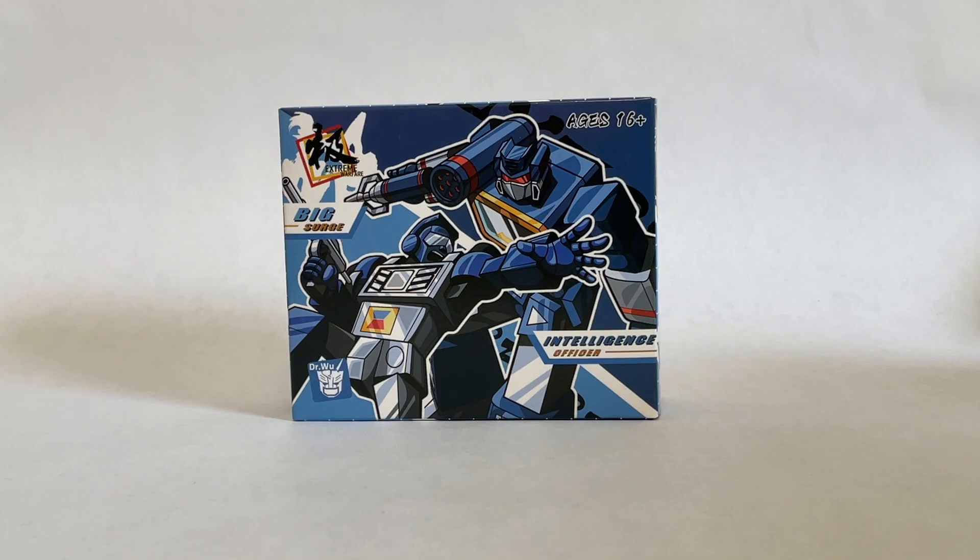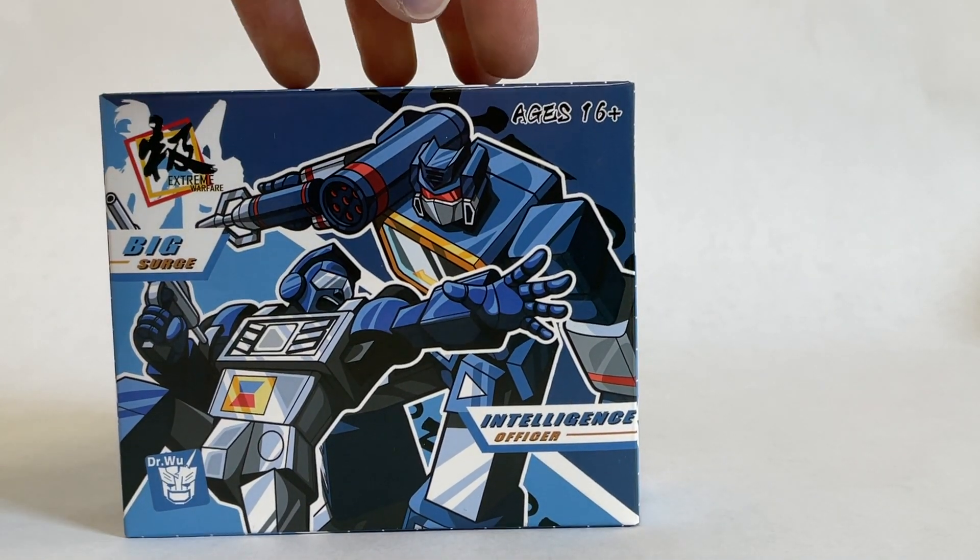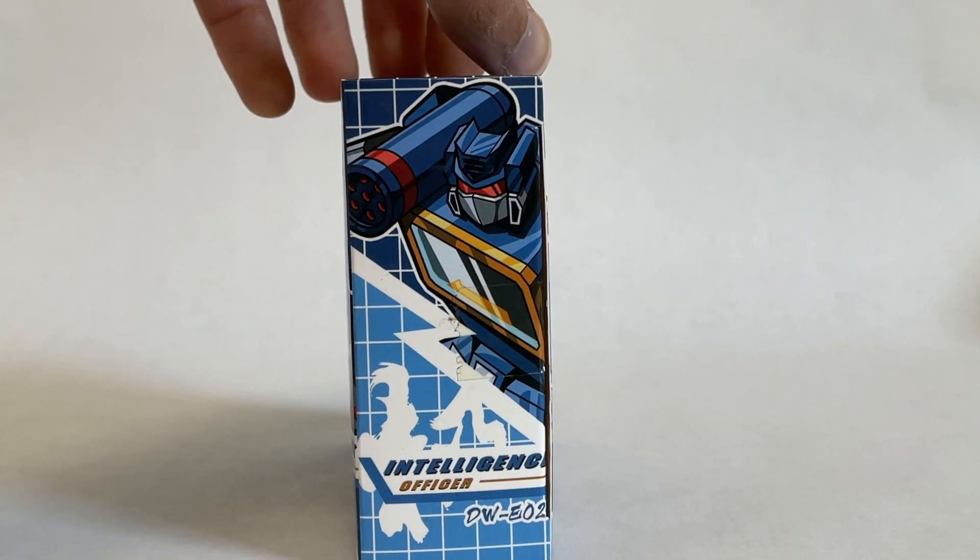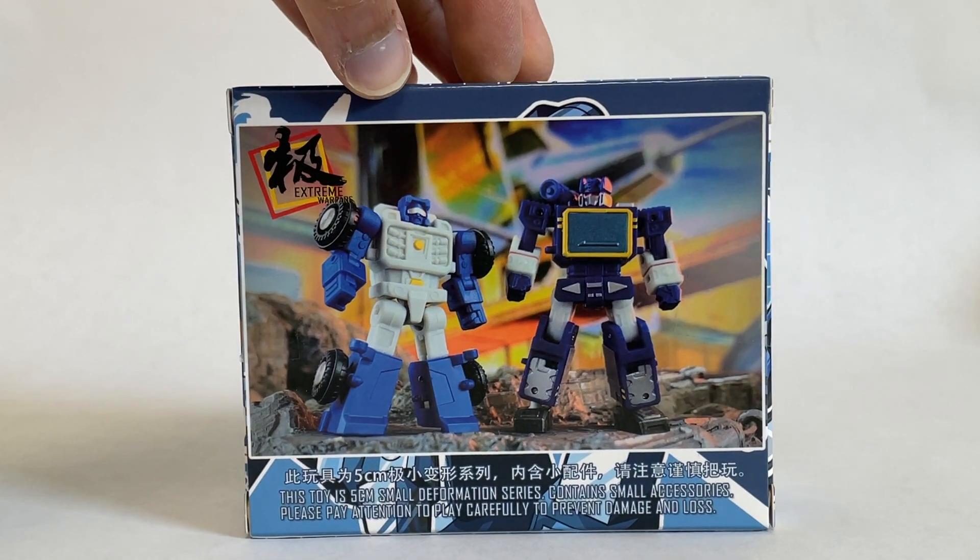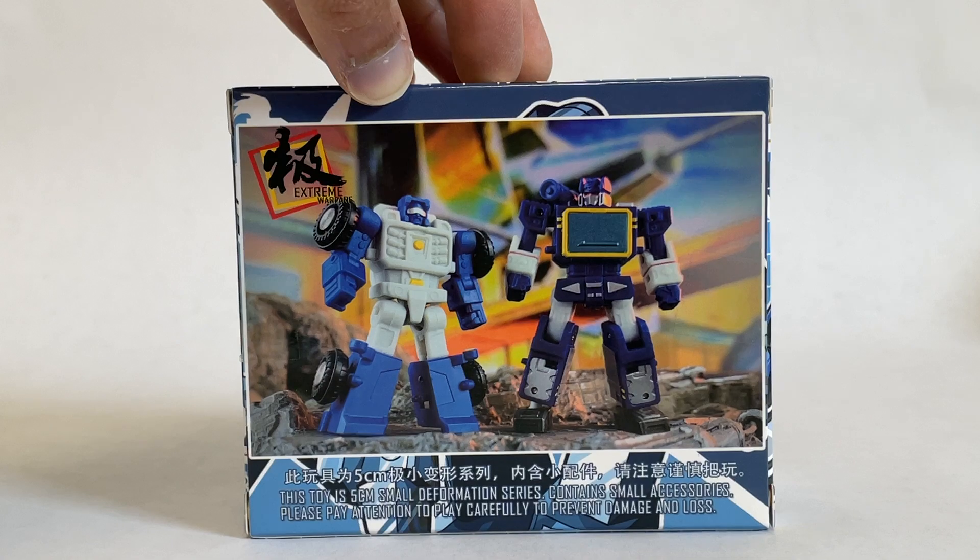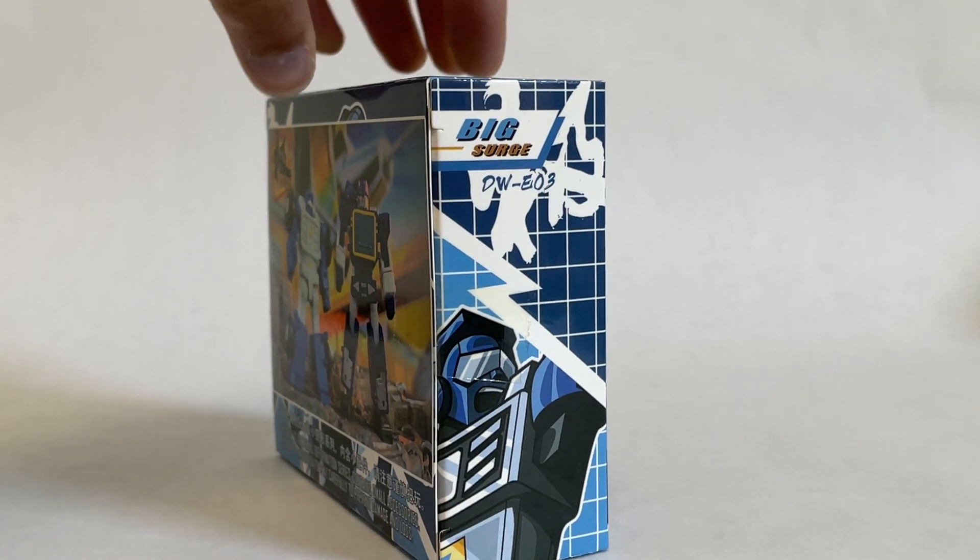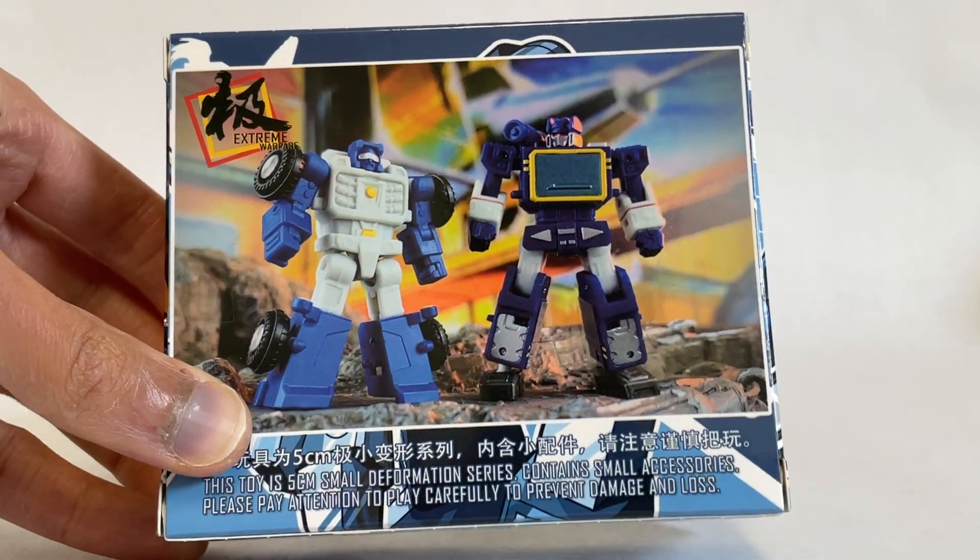So let's have a look at the box here. Again, great art from Dr. Wu. Up front, there's Intelligence Officer aka Soundwave. Shots of the two actual toys on the back, very nicely done. And here we have Big Surge aka Beachcomber. Five centimeter line.